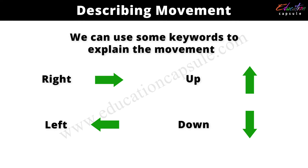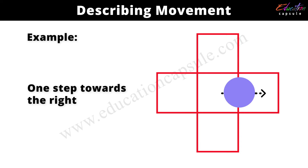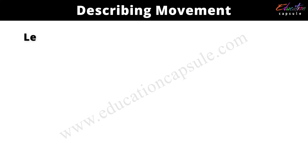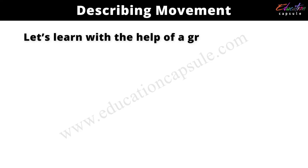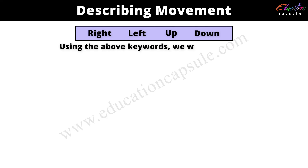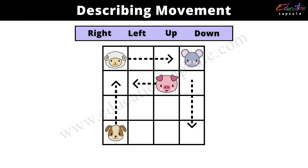For example: one step up, two steps down, one step towards the right, one step towards the left. Let's learn with the help of a grid. Using the above keywords, we will explain the movement of the animals in the grid by counting the steps taken by each animal to reach the destination.